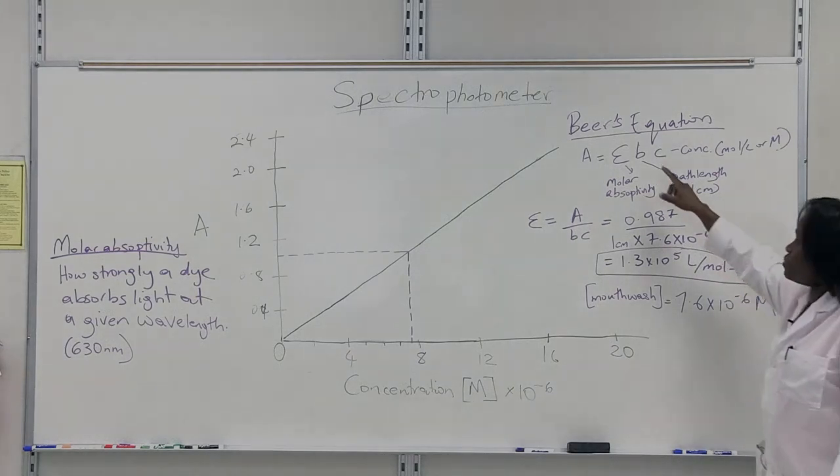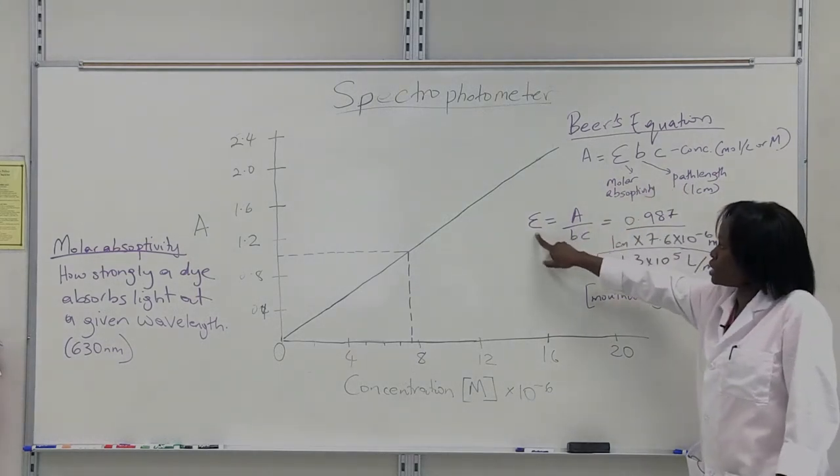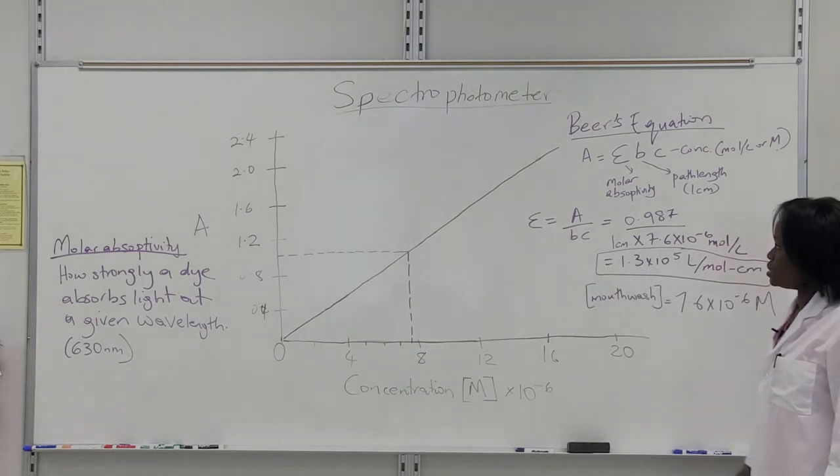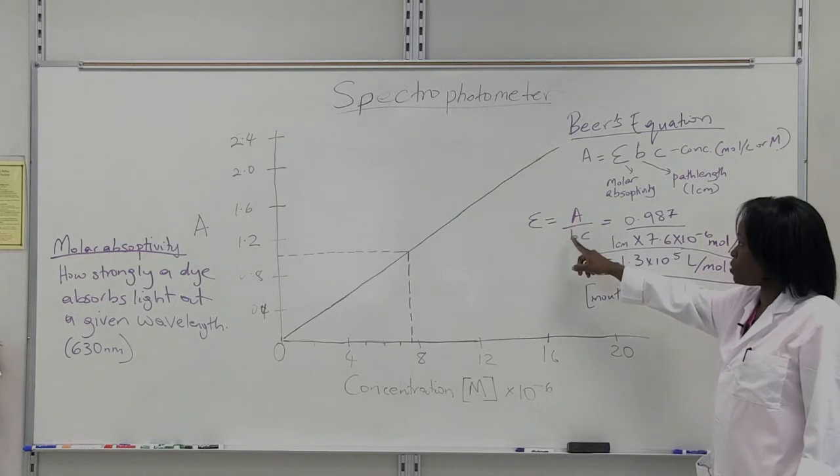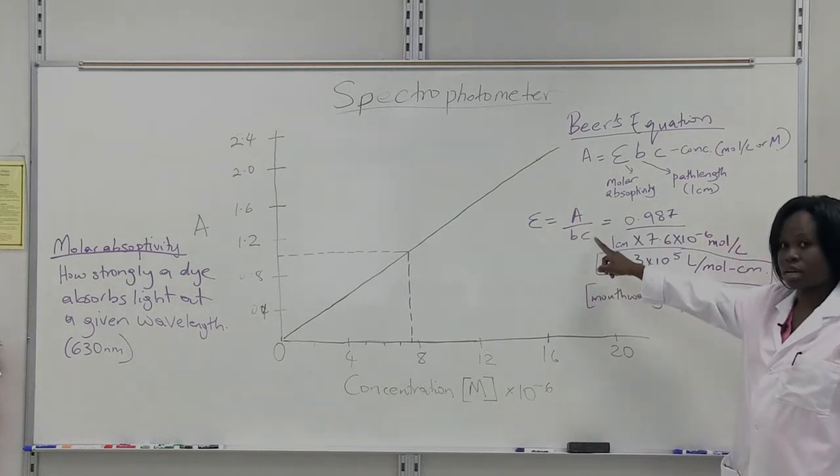So you can rearrange the formula so that you're solving for the molar absorptivity. So therefore, the molar absorptivity would be equal to the absorbance over the path length times the concentration.